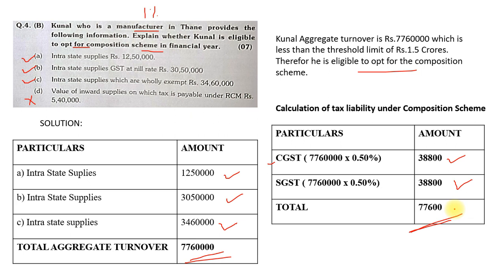So these were the three sums from question number four — very simple. You just have to follow the rules and based on the rules you can solve any kind of sum. I hope everyone has understood. Thank you.